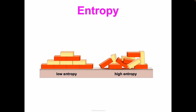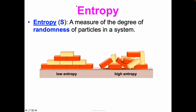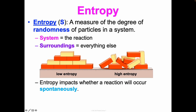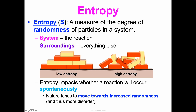Entropy is represented by a capital S. It's a measure of the degree of randomness of particles in a system. Low entropy means order; high entropy means randomness and disorder. Entropy impacts whether a reaction will occur spontaneously — nature tends to move towards increased randomness, towards more disorder and a higher entropy, due to the second law of thermodynamics.